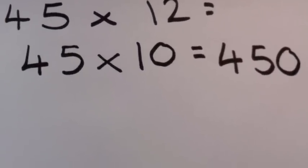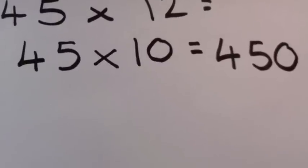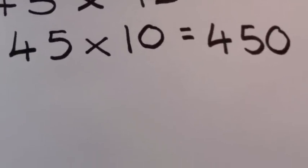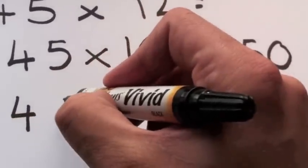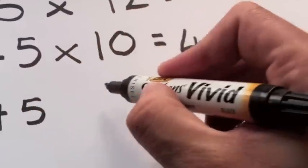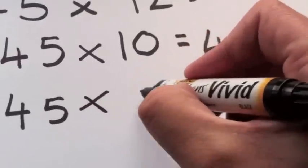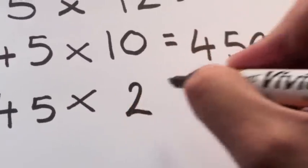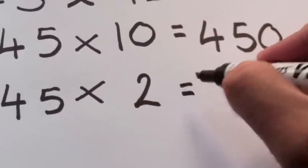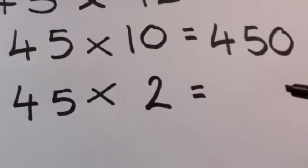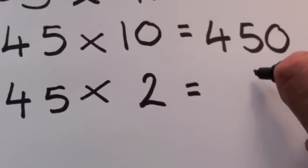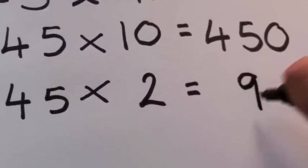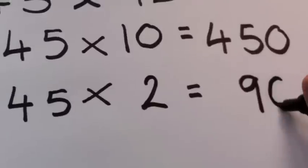That means now you've done your tens column, so all you've got left to do is multiply 45 by 2. So 45 times 2, and that's pretty straightforward as well. Now you could say that you're just doubling 45, and that's going to be 90. 40 and 40 is 80, 5 and 5 is 10...